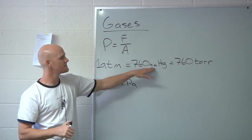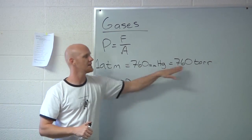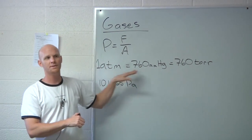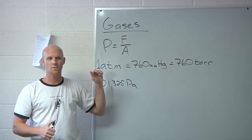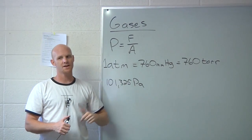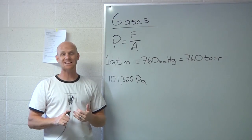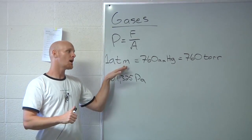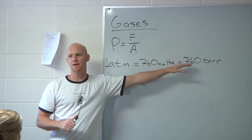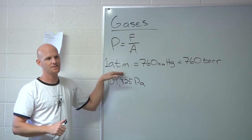This conversion — 760 mmHg equals one atmosphere — is probably worth knowing. It'll show up again; fair chance it'll show up on the front page of your exam.